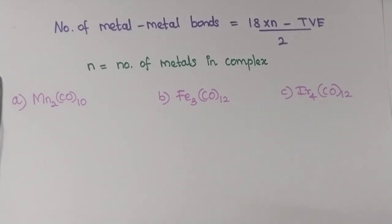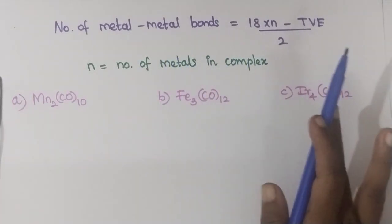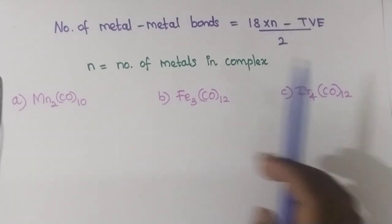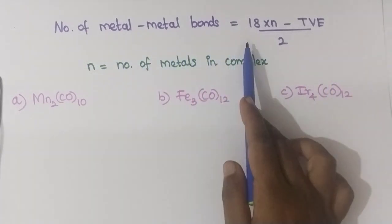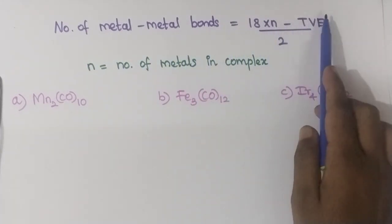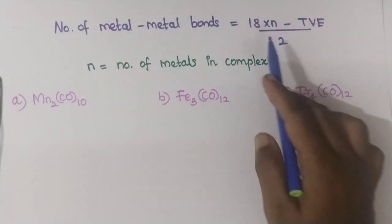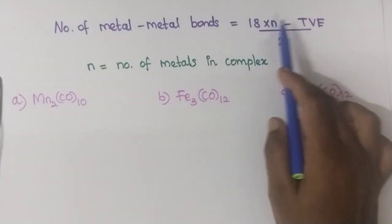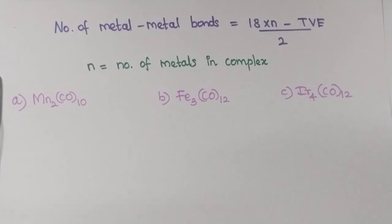It is very easy. The formula is very simple: number of metal-metal bonds is equal to (18 × n minus total valence electron) divided by 2. So: (18n − TVE) / 2.